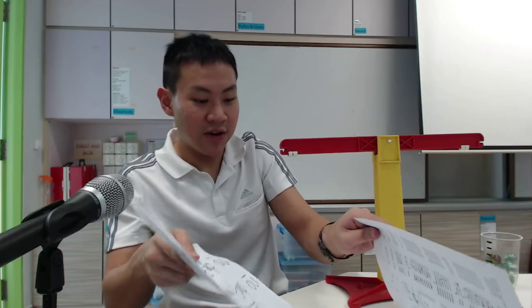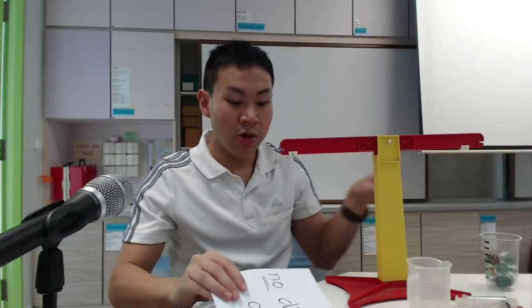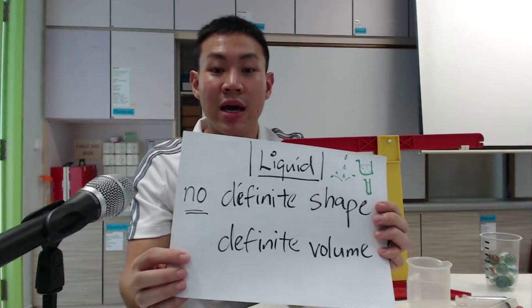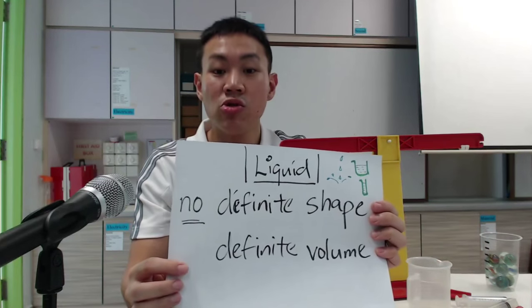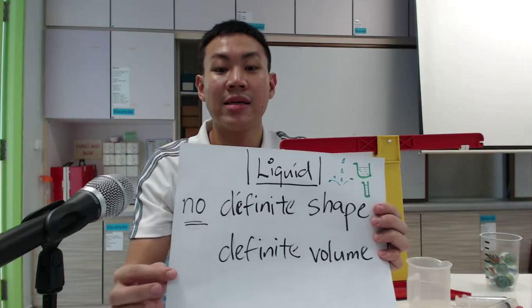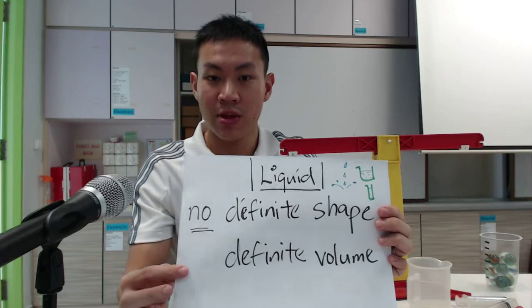Now let's come to liquids — the fun part! Liquids have no definite shape; however, they do have a definite volume.